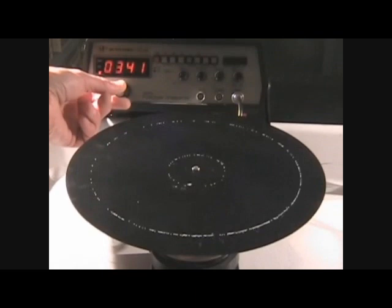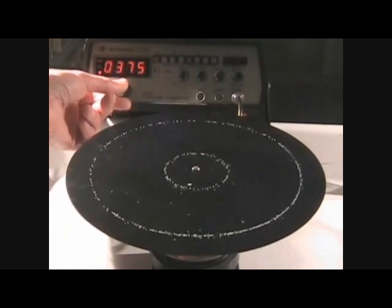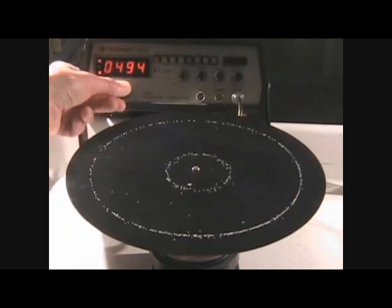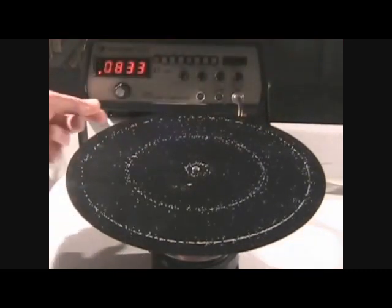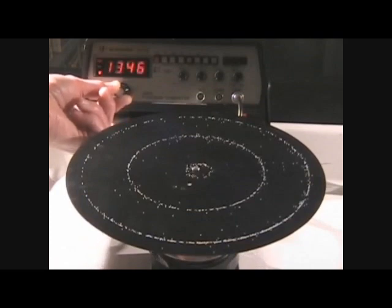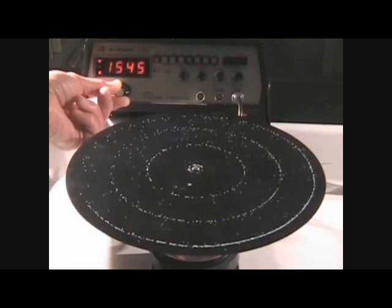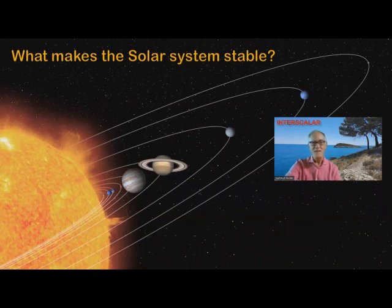Let's watch this sound experiment. It shows the behavior of sand particles on a vibrating metal plate. The particles avoid resonance areas of maximum vibration and accumulate in rest areas of minimum vibration. Orbits are forming. With the increase of frequency, the pattern increases in complexity. What makes the pattern stable? What makes the solar system stable? Actually, the stability of planetary systems is one of the unsolved fundamental problems in physics.